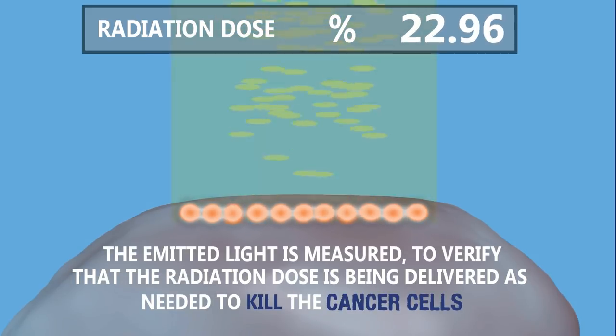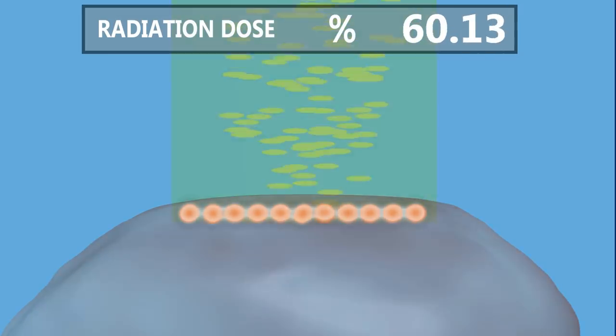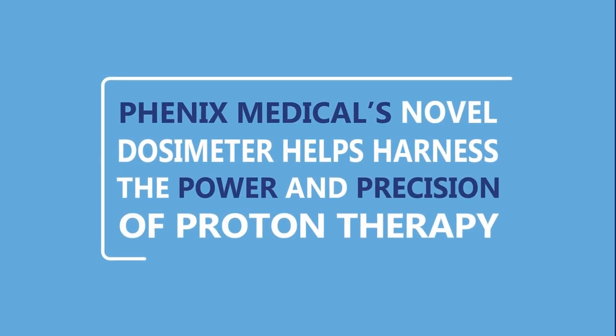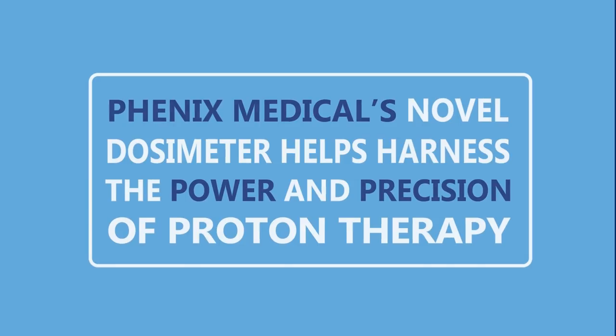To do this, the emitted light is measured to verify that the radiation dose is being delivered as needed to kill the cancer cells. Phoenix Medical's novel dosimeter helps to harness the power and precision of proton therapy.